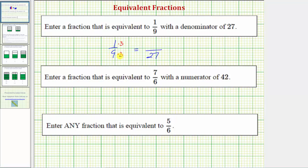Again, 9 times 3 equals 27, and for the numerator we have 1 times 3, which equals 3. So the fraction that is equivalent to 1/9 that has a denominator of 27 is 3/27.